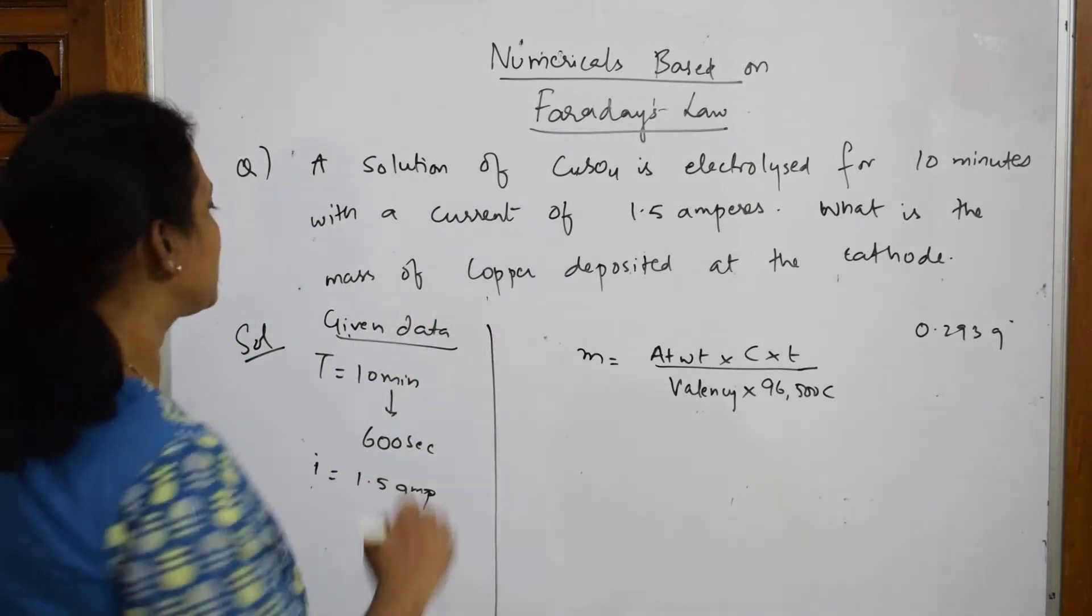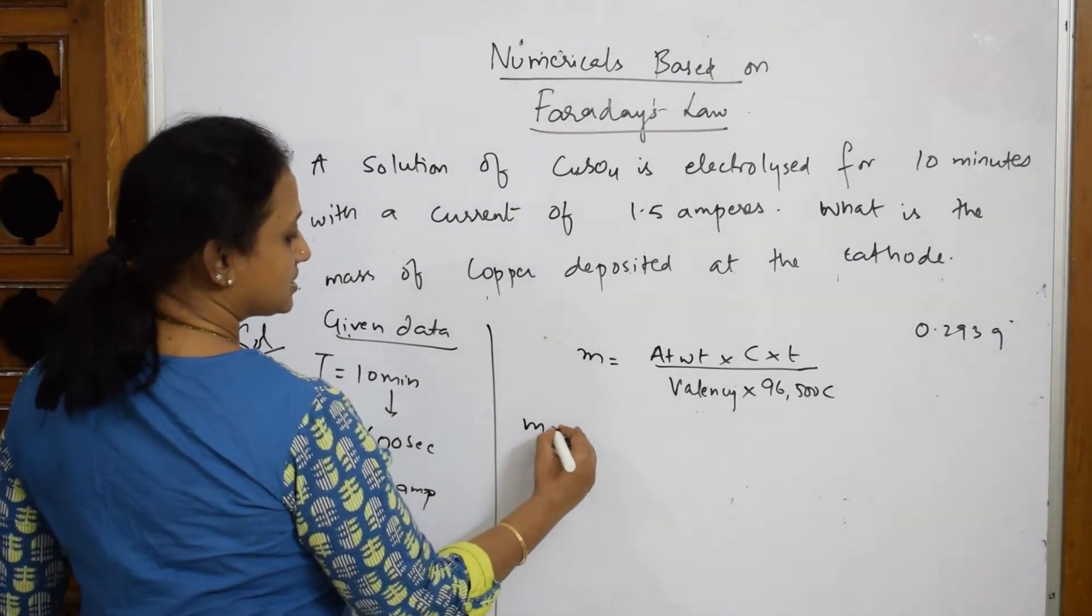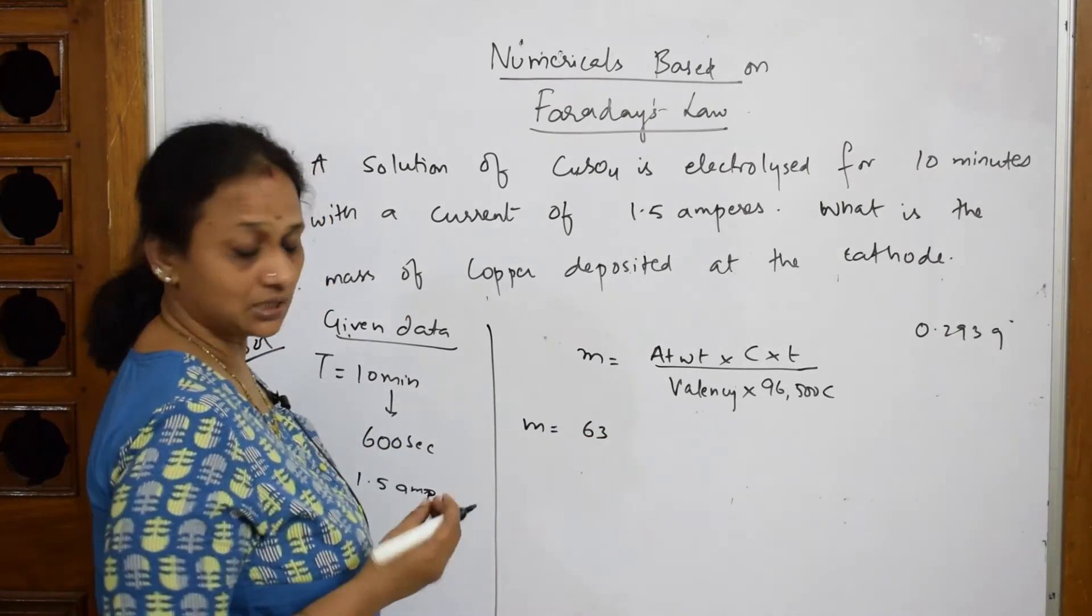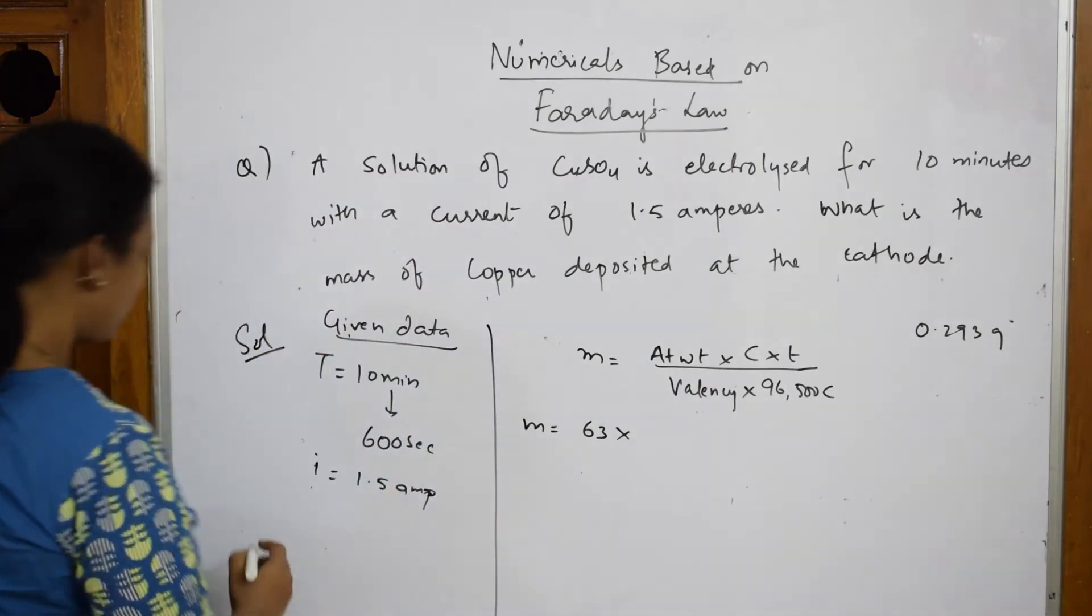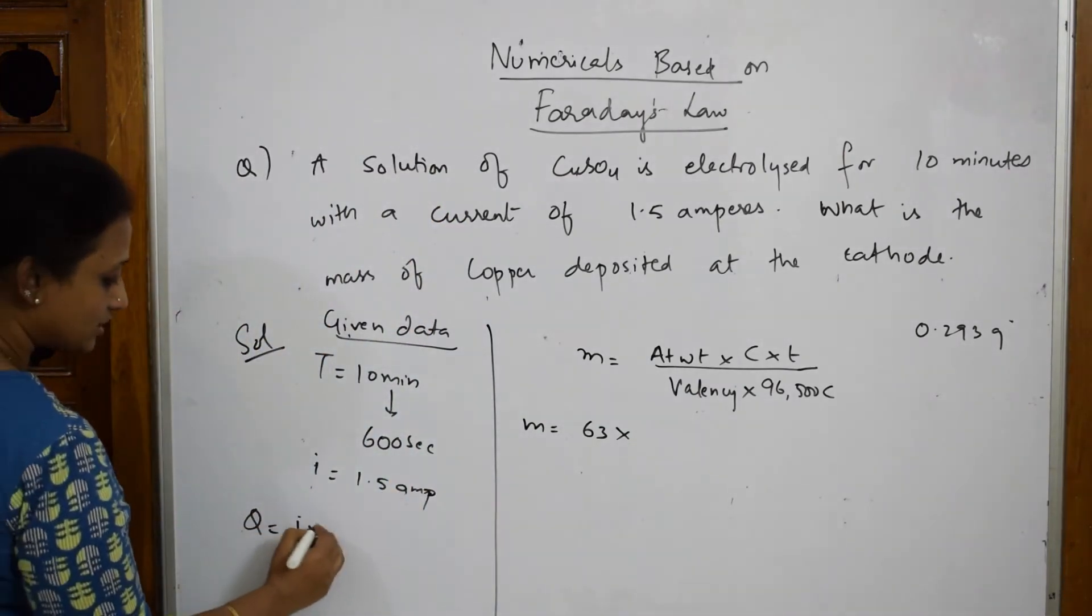So, what is atomic weight of copper? 63, the amu grams, into C. What is current equal to? How should I calculate?